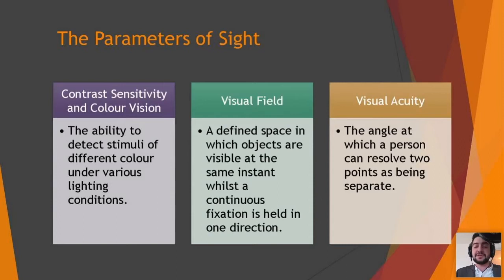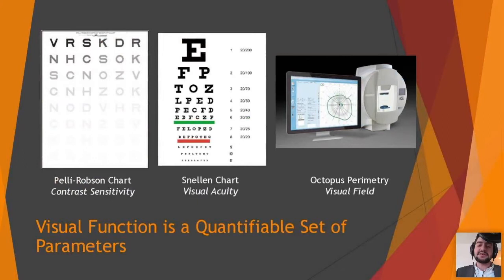The beauty of all these parameters is that they can be measured and quantified. We can use a Peli-Robson chart to identify a person's ability to identify letters of different contrast, which translates well to actual mobility in real life. We can use a Snellen chart for visual acuity. And we have amazing medical devices which can measure things like the visual field, such as Octopus Perimetry. So we can put numbers to all of these things.